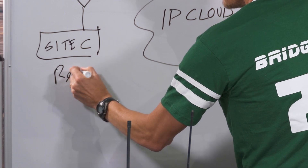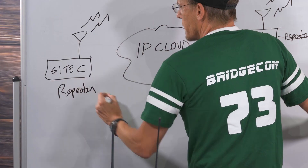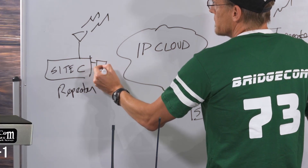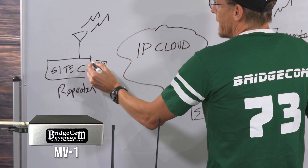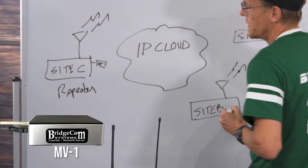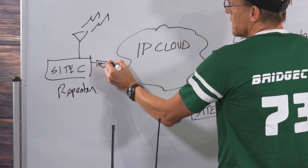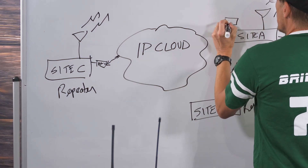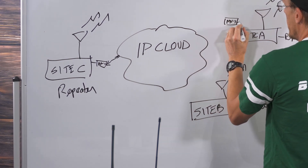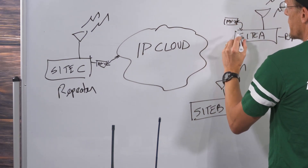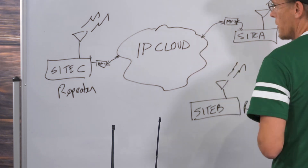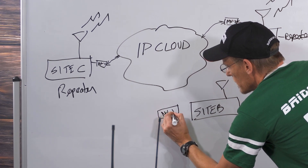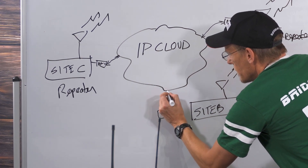Each one of these sites — in this case we're looking at a repeater — has a device called the MV1 that connects to the repeater's accessory port and to the internet. Each site has an MV1, or what we call an ARNS1 if you're in the amateur radio community, and of course we have one at each site.